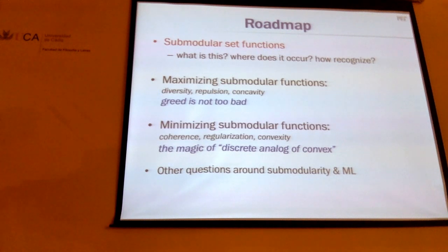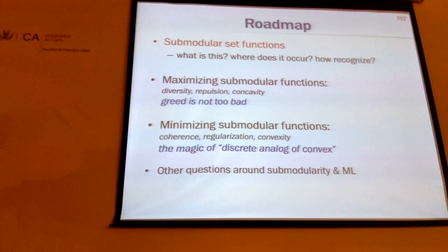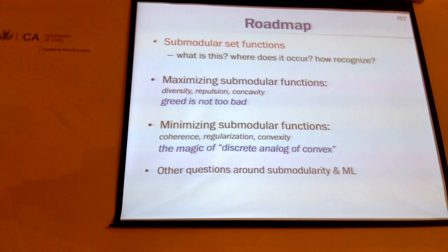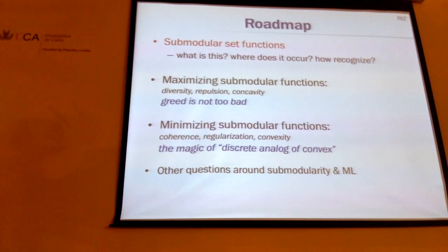Here's the roadmap for the next two lectures. We start with the definition of sub-modularity, where it comes from, how to prove that something is sub-modular — so we get a feel for what a sub-modular function actually is. Then we'll go into optimization. There's actually a lot of different topics around sub-modular functions. I picked two of them because they're coherent: maximizing a sub-modular utility function, and minimizing sub-modular functions — minimization will be the second lecture. These two are very different. The first is mostly related to maximizing diversity and repulsion; the other is related to why sub-modular functions are called the discrete analog of convexity.